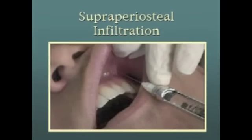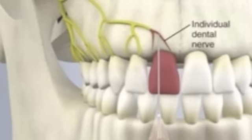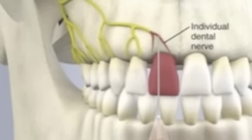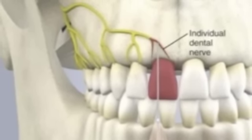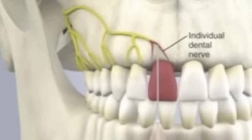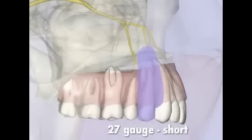The supraperiosteal injection infiltration. Nerves anesthetized: large terminal branches of the dental plexus of the tooth being anesthetized. Areas anesthetized: pulp, buccal periosteum, connective tissue, and mucous membranes of the area being anesthetized.